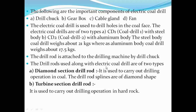The drill rods used along with the electric coal drill are of two types: one is called the diamond section drill rod and the second is called the turbine section drill rod. The diamond section drill rod is used to carry out drilling operation in coal, and its drill splines are of diamond shape. The turbine section drill rod is used to carry out drilling operation in hard rock. I'll try to add diagrams in the next video lecture to give more clarity on what these two look like.